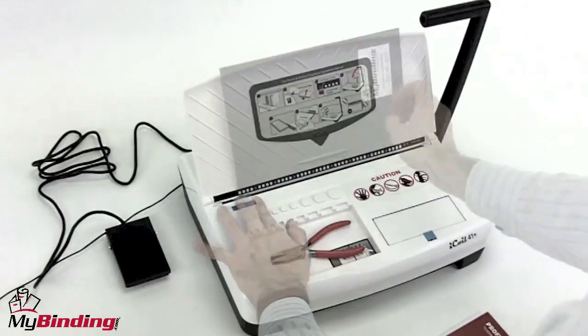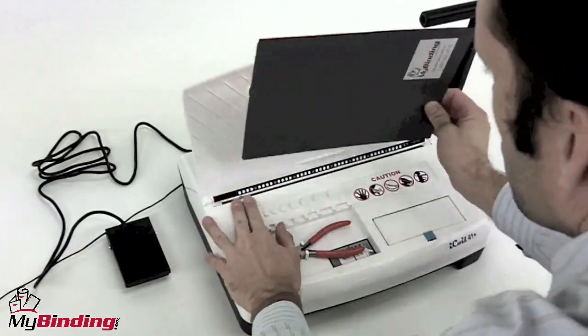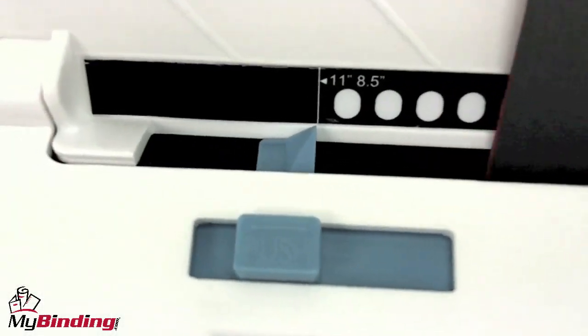Let's see just how simple it is and watch it in action. First you want to adjust and set the side margin control so that all punches are made consistent throughout your whole project.